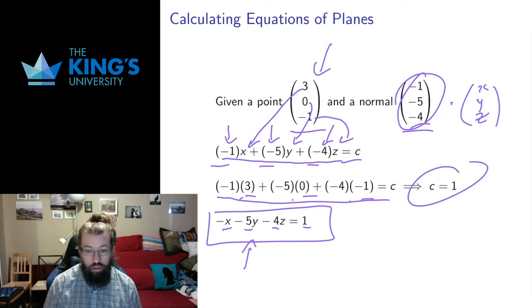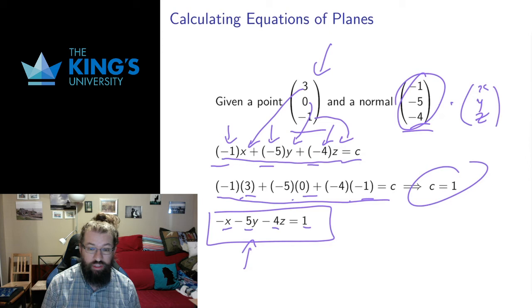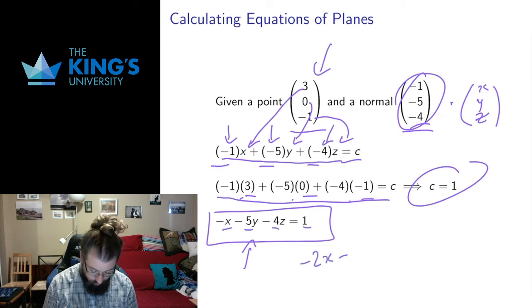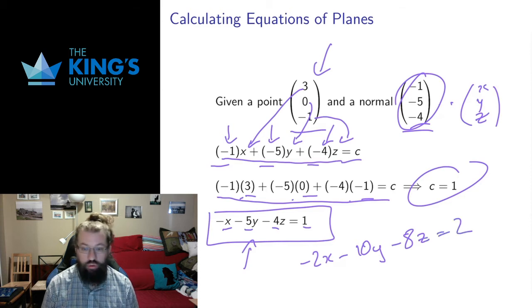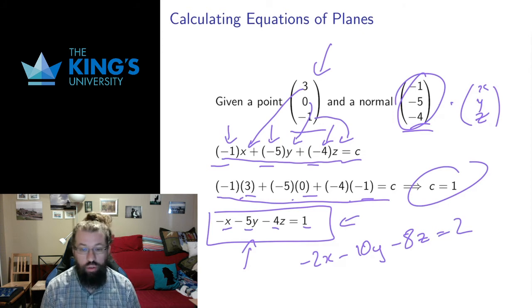Now the equation of a plane is not entirely unique. You could scale this. You could multiply both sides of the equation by any non-zero number you want. Often I'll scale it so it's the easiest thing to deal with without denominators, but there are different preferences for that. So know that it's possible if you had -2x - 10y - 8z = 2. That's also the equation of that plane, because I divide both sides by 2 and get the original equation back.